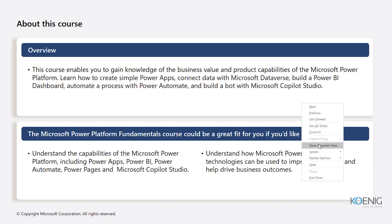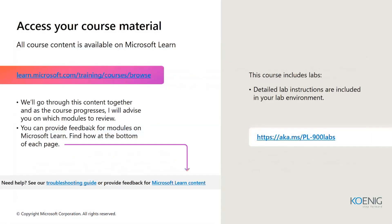This content is going to give an overview of courses in Microsoft. The Microsoft Learn platform helps you get the required documents related to any course. For this course, aka.ms/pl-900labs will give you the lab instructions. If you want to get any documents, you can go through the course contents at learn.microsoft.com/training/courses/pl-900. You have to create an account to access the content.